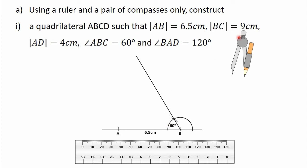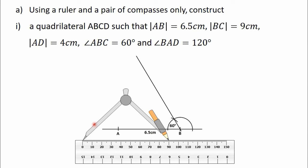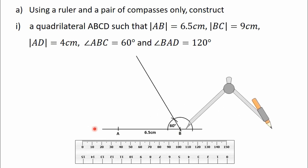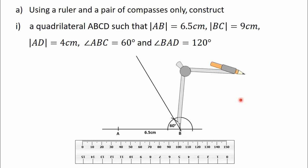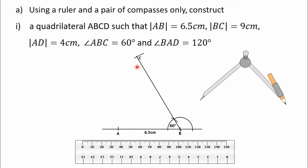The length of side BC is 9 cm. To get BC, measure 9 cm on the ruler using the compass — put the needle on point 0 and stretch the other part to 9 cm, which is 90 mm on the ruler. Then move the needle of the compass to point B and turn it to construct an arc to intersect the line you constructed. The point of intersection of the line and the arc gives us point C.